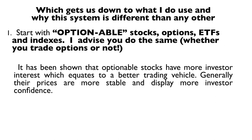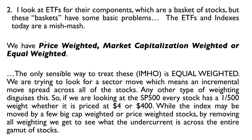So what do we use, and why is the system different? First, we start with optionable stocks, options, ETFs, and indexes. I would never advise someone to trade something that doesn't have options on it — the reason is simple. There's much more investor interest in things that have options on them; that equates to a better trading vehicle, generally more stable prices, and much more investor confidence.